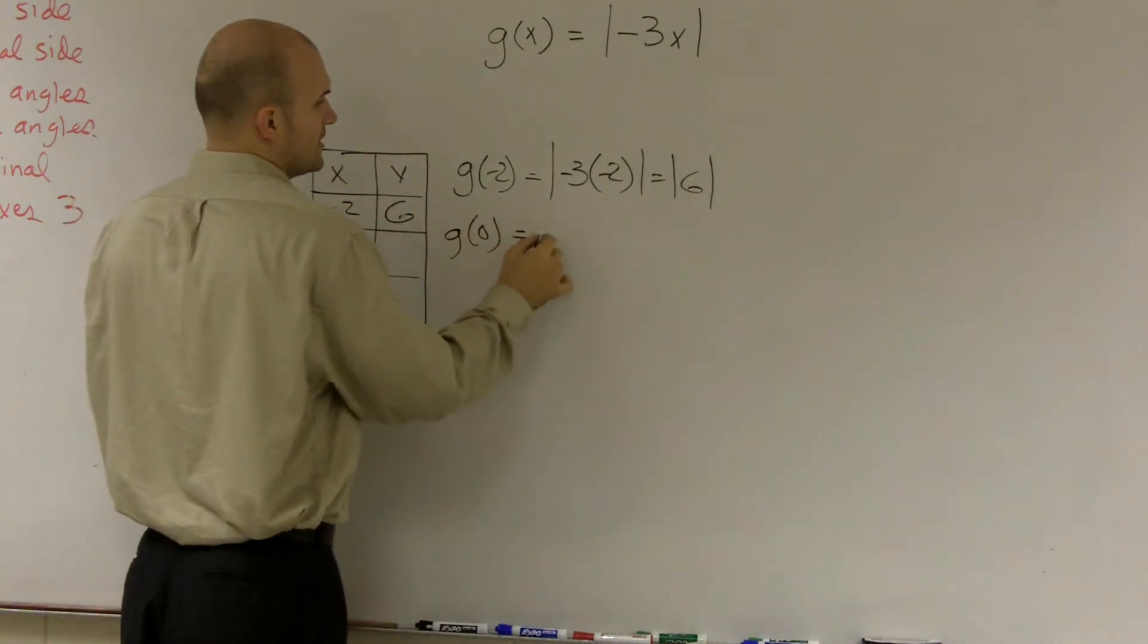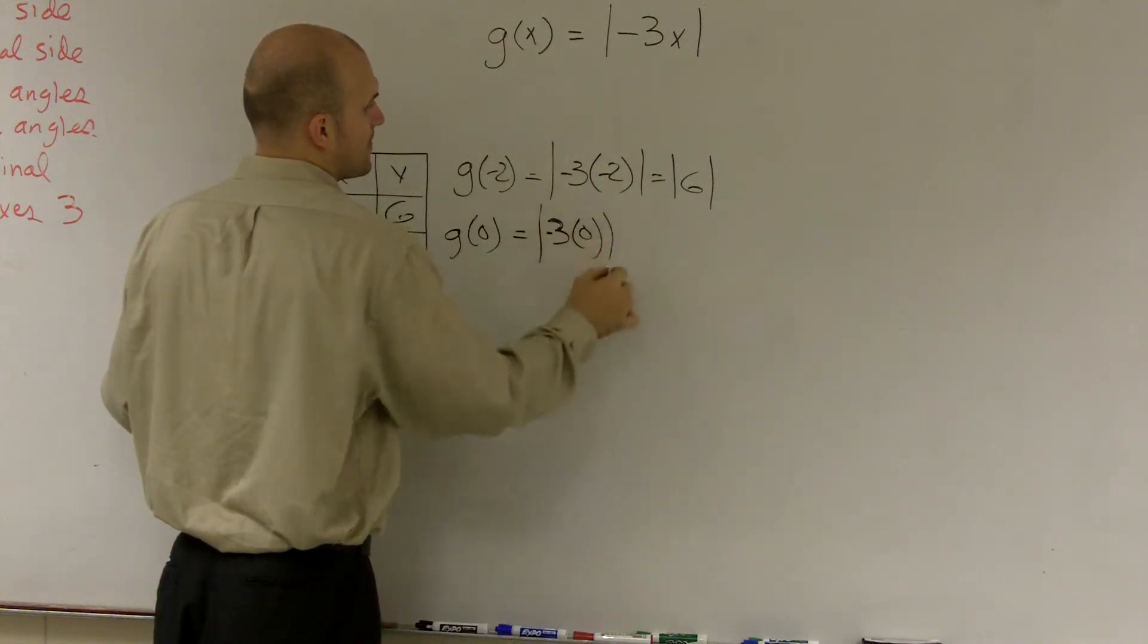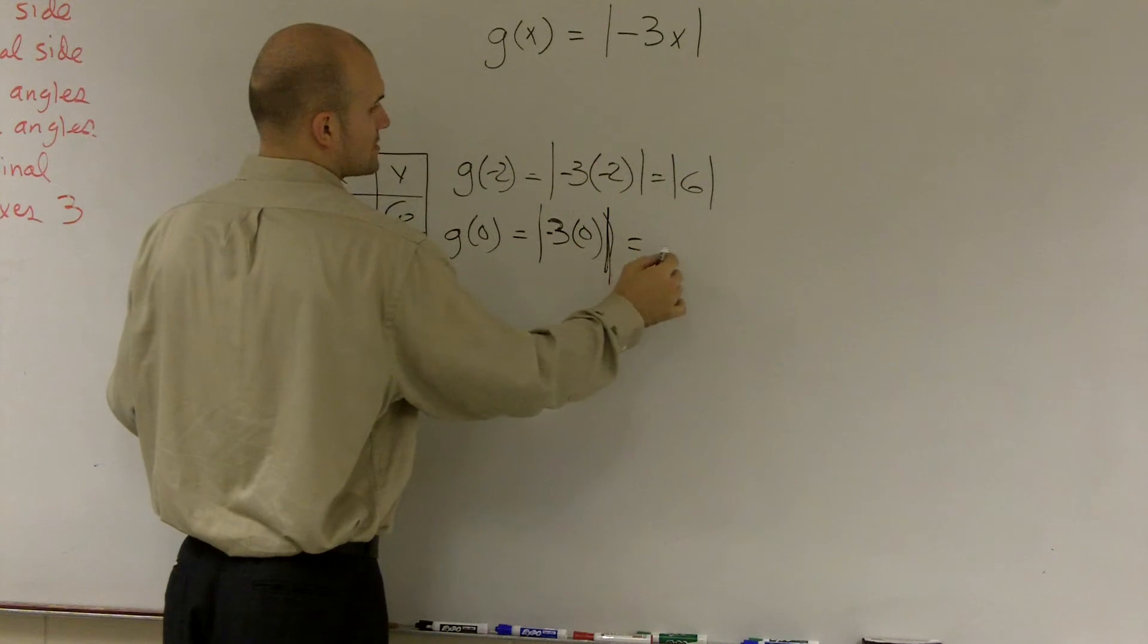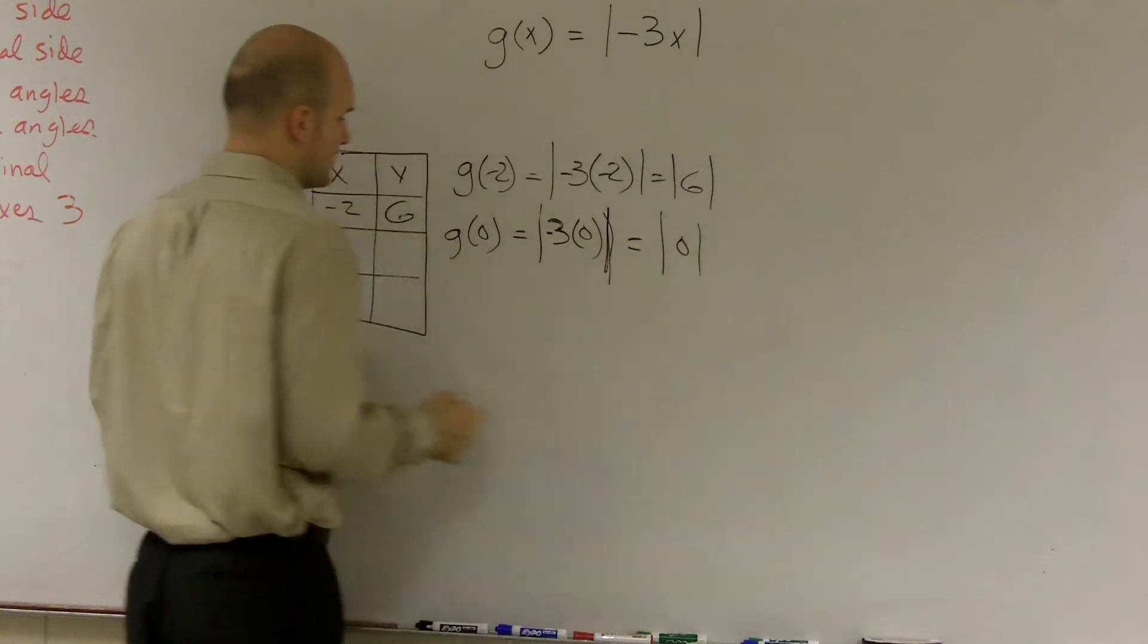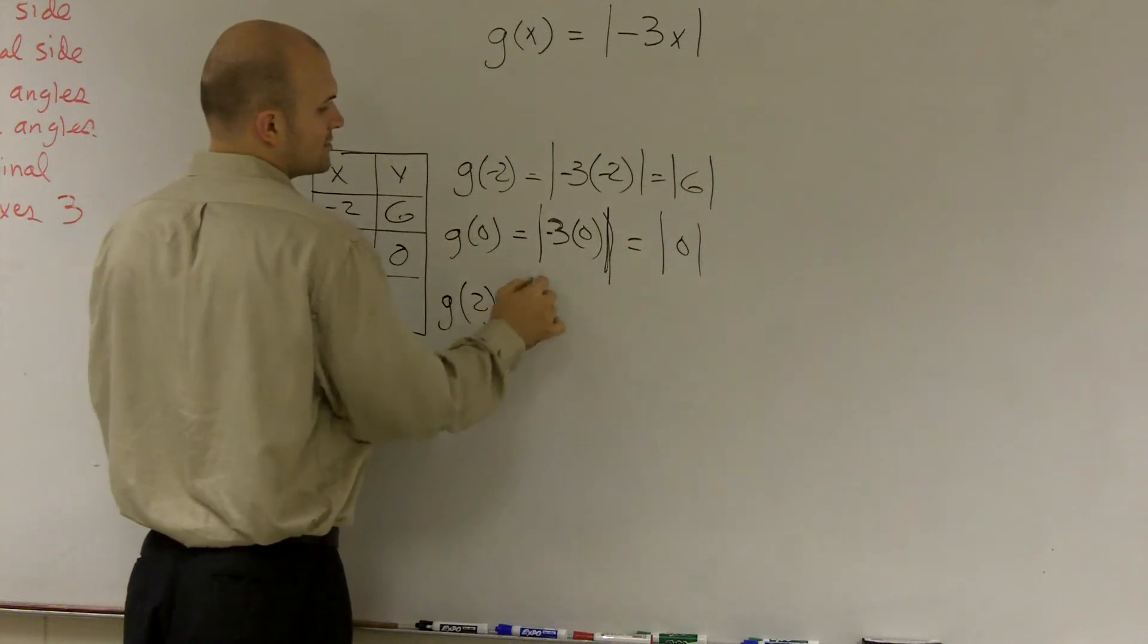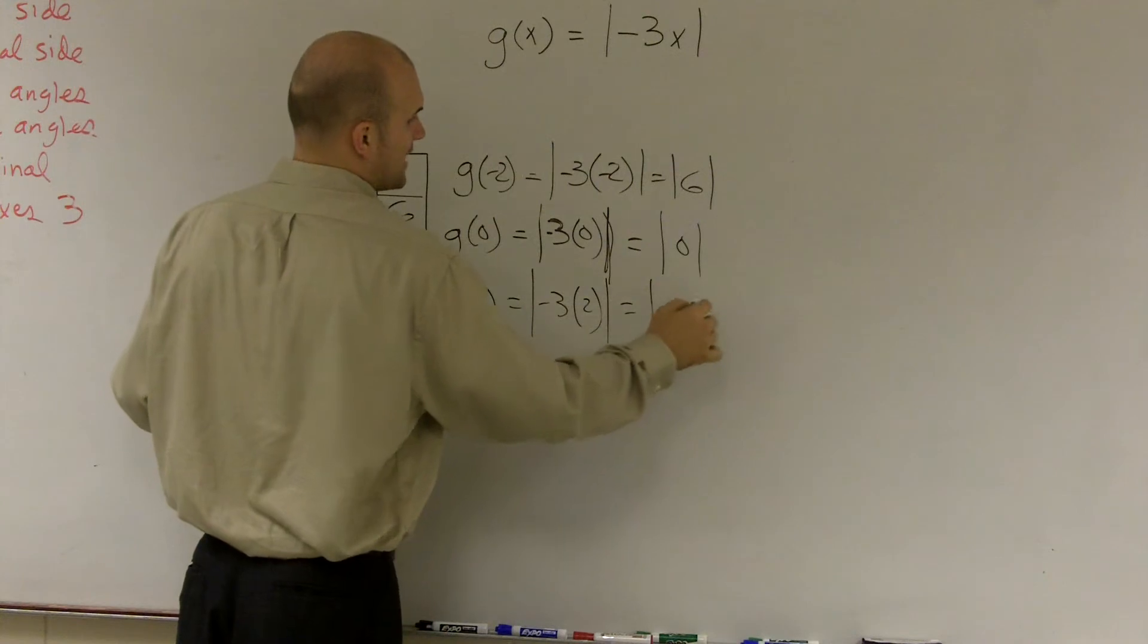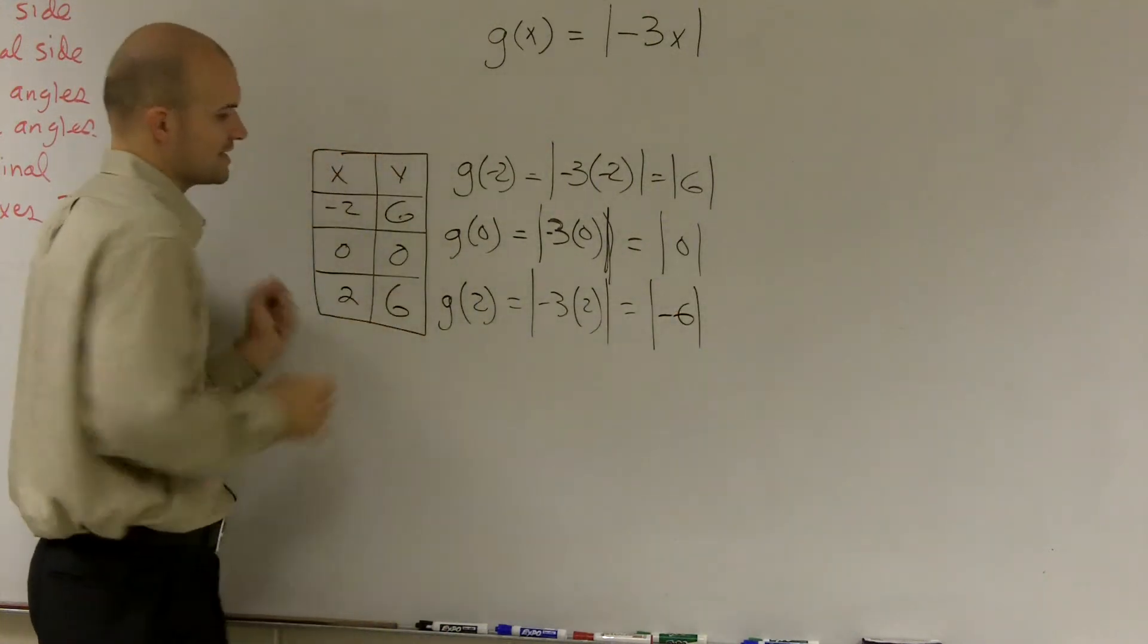g of 0 equals absolute value of negative 3 times 0 equals absolute value of 0, which is 0. Then we do the last one. g of 2 equals negative 3 times 2 equals absolute value of negative 6, which equals 6.